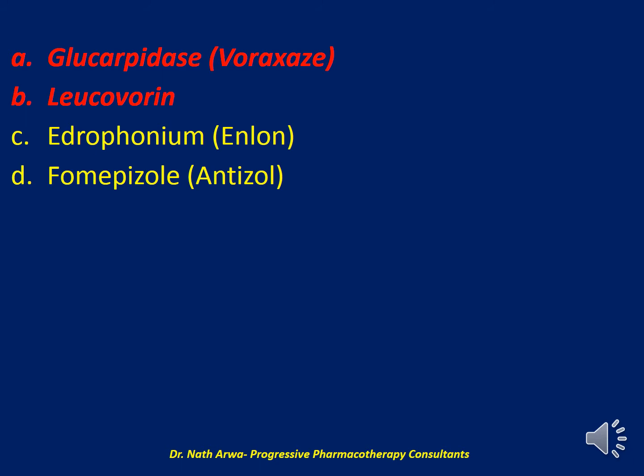Fomepizole, marketed as Antizol, or IV ethanol are the antidotes of choice for antifreeze — ethylene glycol — and methanol toxicity. Leucovorin doesn't need dihydrofolate reductase for activation and allows normal synthesis of purines and pyrimidines. Glucarpidase is an IV or intrathecal enzyme that metabolizes methotrexate quickly, especially useful when patients develop aplastic bone marrow toxicity, which has high mortality rates.